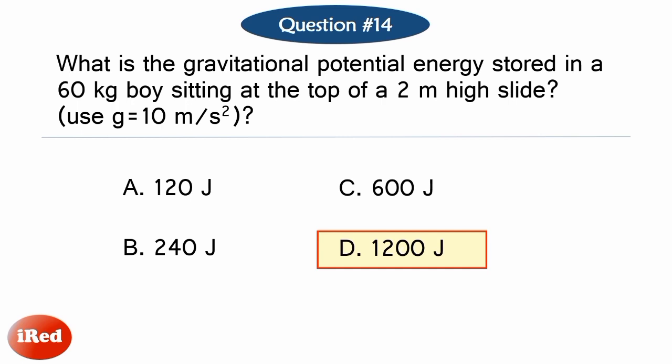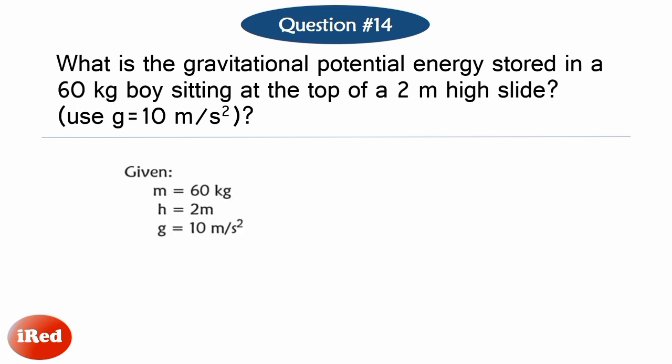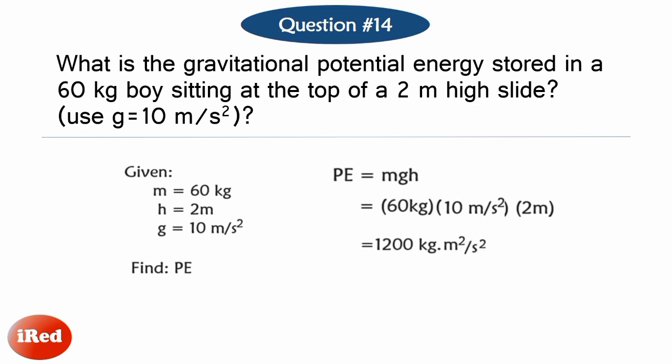The correct answer is Letter D. How did we get 1,200 joules? The given data are mass of the buoy, which is 60 kilograms, and his distance above the ground, which is 2 meters. Gravitational potential energy equals mass times acceleration due to gravity times height: 60 kg × 10 m/s² × 2 m = 1,200 kg·m²/s², or 1,200 joules.